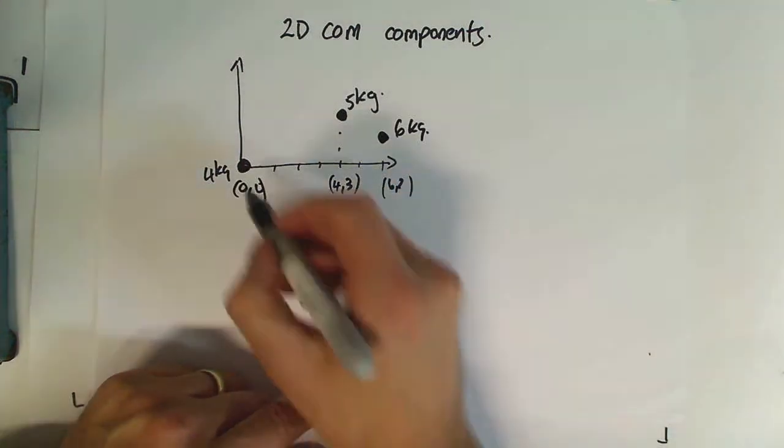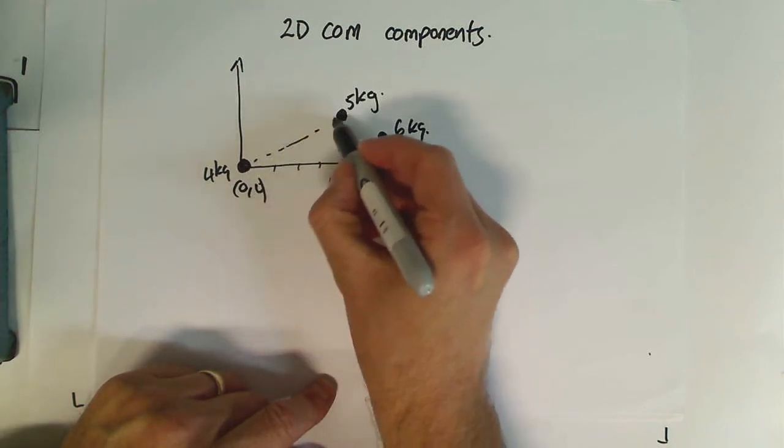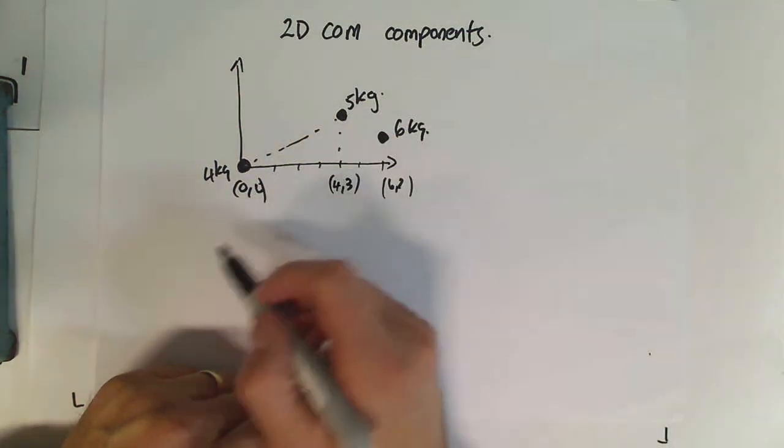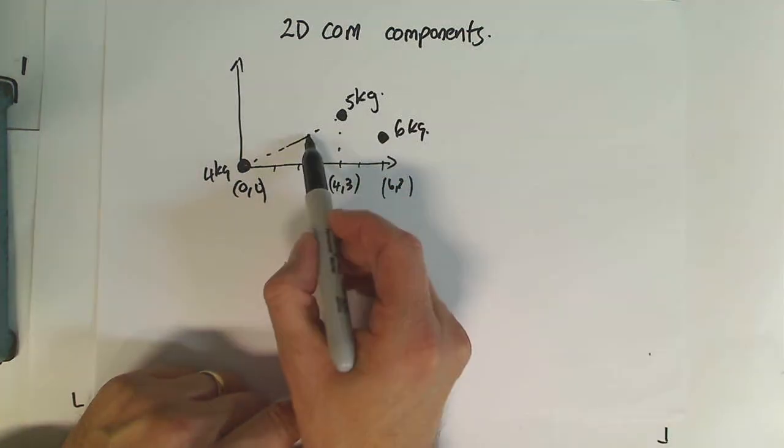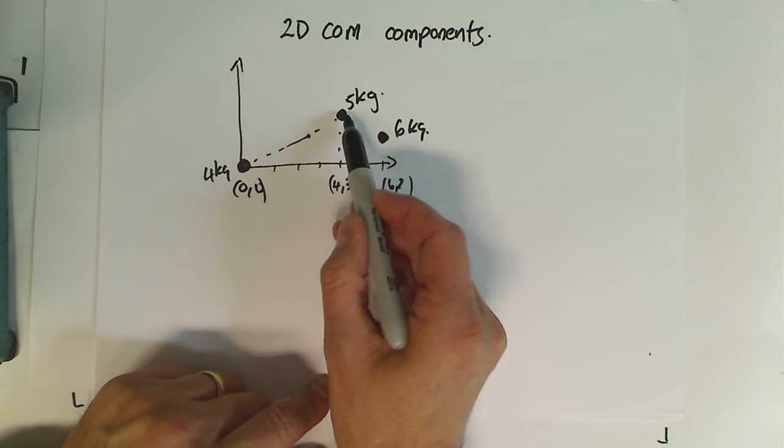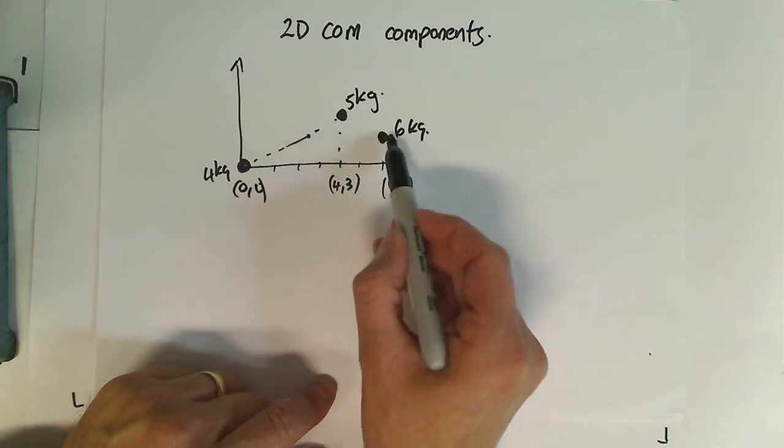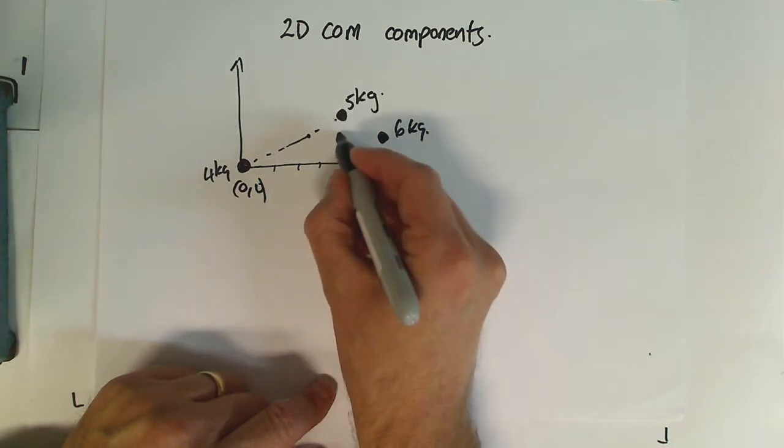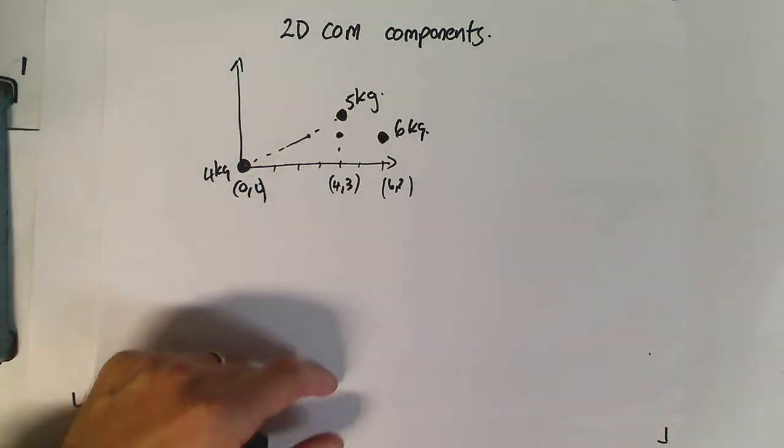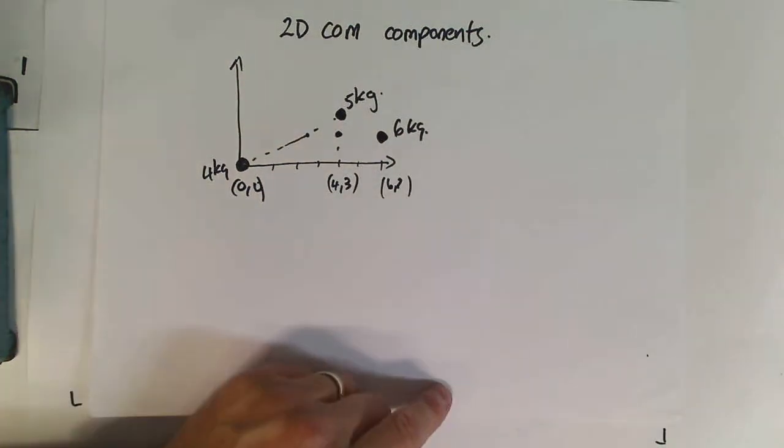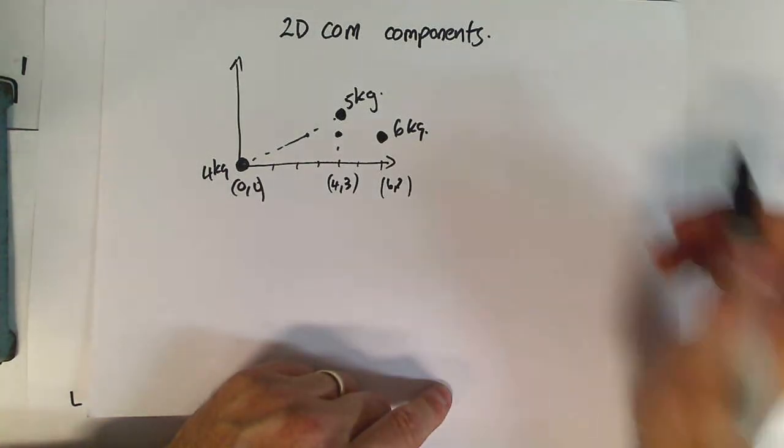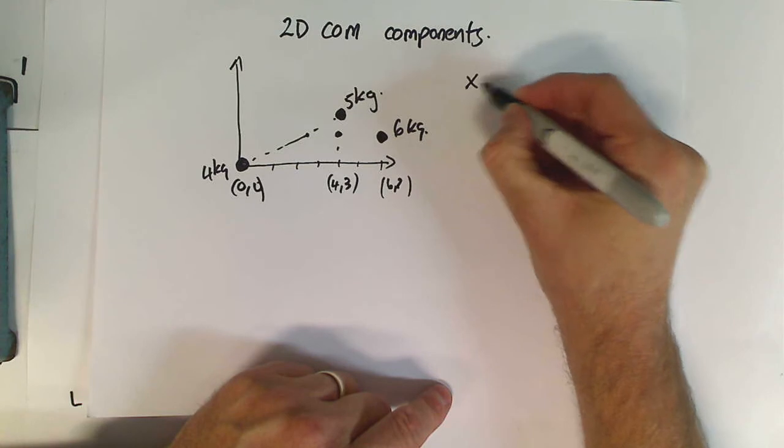Now, obviously, we could work out the center of mass between these two guys. And with the 5kg being up there, it'd be somewhere about there. Then we could work out the center of mass between our 9kg object and our 6kg object. And it's going to be somewhere about there. Now, that's just approximate, and it's a method we could use. But we can just treat this as two center of mass equations.